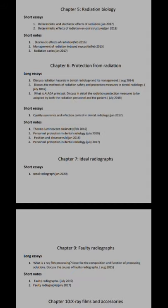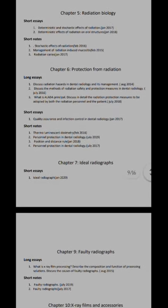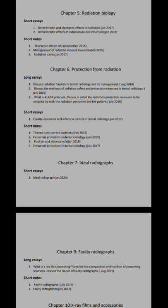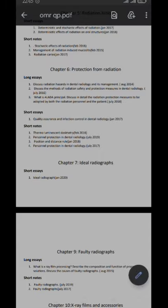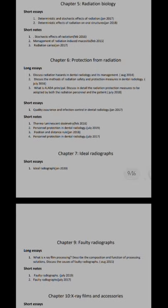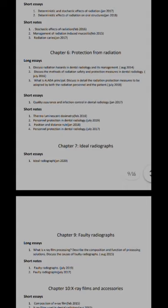The next important section is Radiation Biology. Usually straightforward questions are asked here. Long essays are not much asked, but short essays and short notes are. The first question is about deterministic and stochastic effects of radiation — a direct question. There is a beautiful table in the textbook differentiating between stochastic and deterministic radiation, so you can read and write that out.